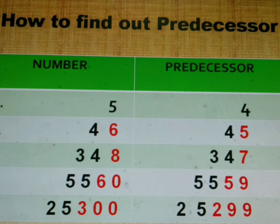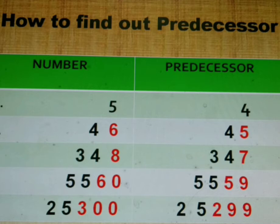In five thousand, five hundred and sixty, there are zero ones. So we have to change both the ones and tens places. Five thousand, five hundred, write as it is. And in place of sixty — sixty before is fifty-nine — we write five thousand, five hundred and fifty-nine. So, predecessor of five thousand, five hundred and sixty is five thousand, five hundred and fifty-nine.